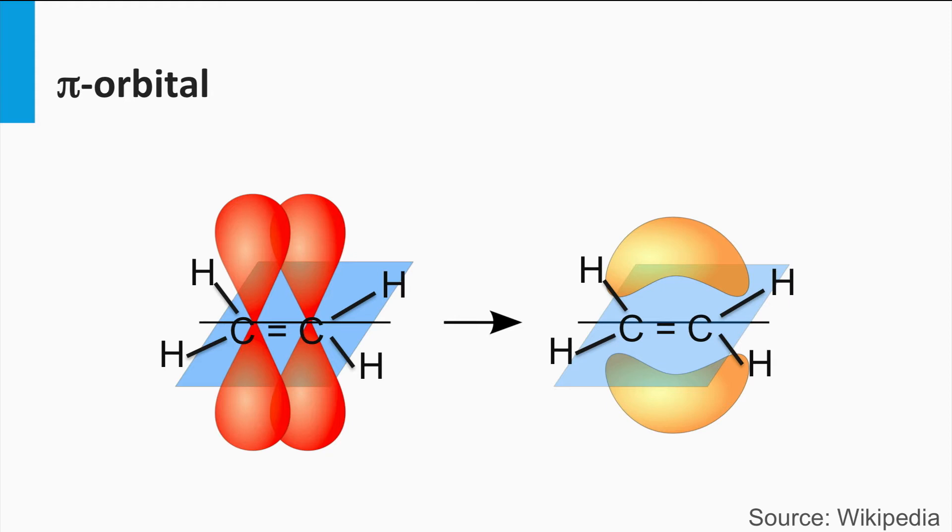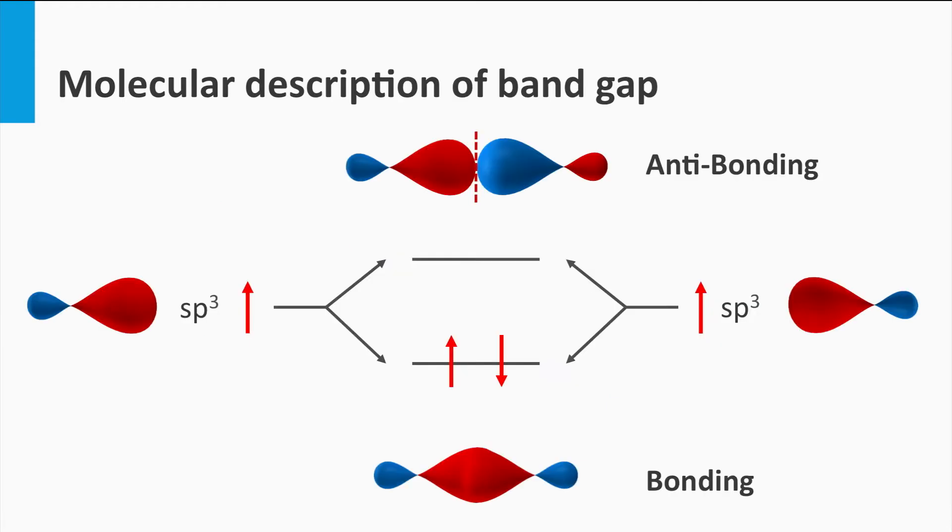Two neighboring pz orbitals form a so-called pi orbital. In week 2 we discussed that two individual sp3 hybrid orbitals of a silicon atom can make an antibonding and a bonding state. The same is valid for the two pz orbitals making a molecular pi orbital. They make a bonding and antibonding pi state.